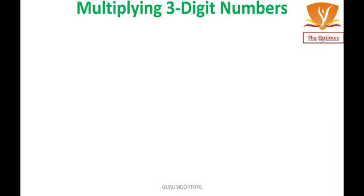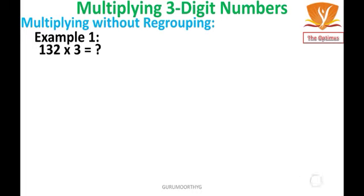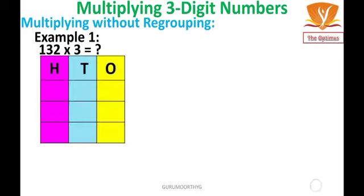Now we are going to continue Multiplying Without Regrouping. 132 × 3 = ? I am going to represent in a place value chart: 132 × 3. We know 132 is the multiplicand and 3 is the multiplier. First I am going to multiply the 1's place, then the 10's place, then the 100's place.